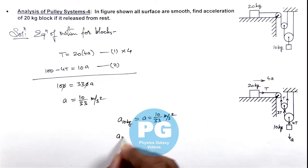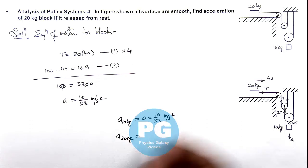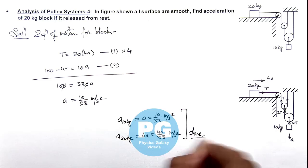And acceleration of 20 kg block we can write as 4ay, that is 40 by 33 meter per second square. So these are the final results of this problem.